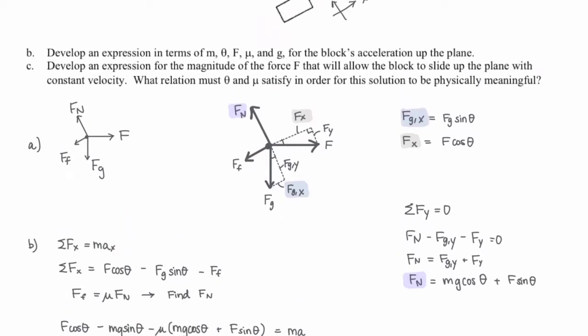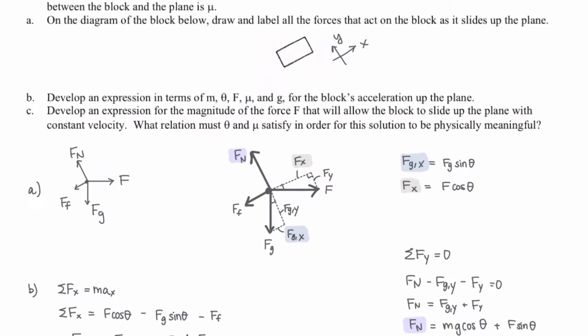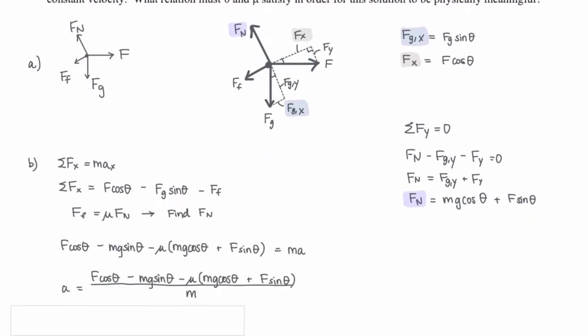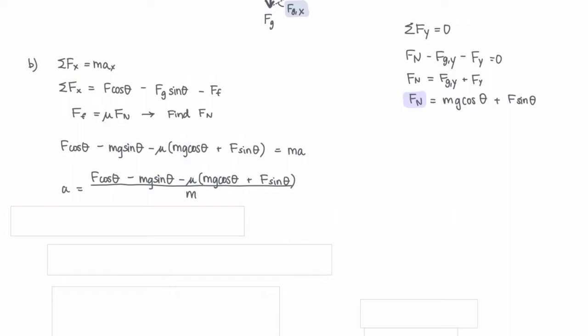Part C. Develop an expression for the magnitude of the force F that will allow the block to slide up the plane with constant velocity. Also, what relation must theta and mu satisfy in order for this solution to be physically meaningful? For the velocity to be constant, our acceleration needs to equal zero.